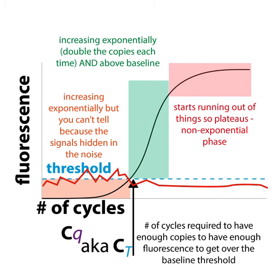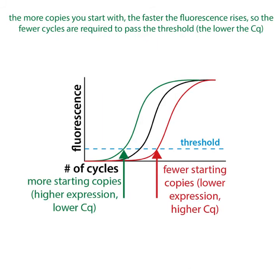Then you start running out of things — primers, DNA letters, etc. — and you reach a plateau phase. The CQ or CT is the number of cycles required to get above that threshold. The more starting copies you have, so the higher the expression of that gene, the lower the CQ or CT. If you don't have many copies, you're going to have a higher CQ.